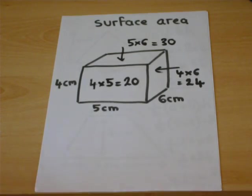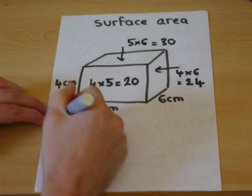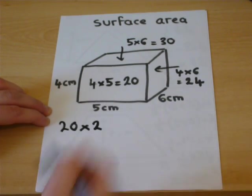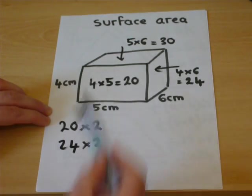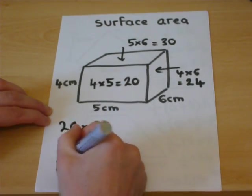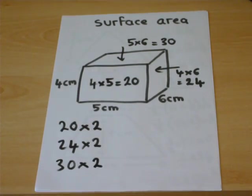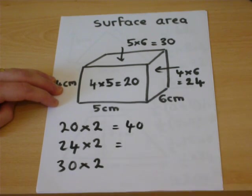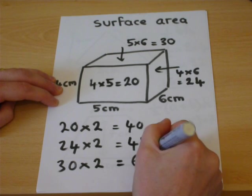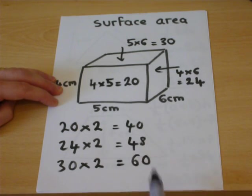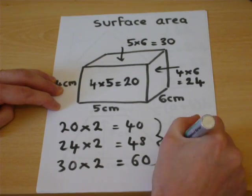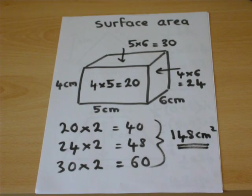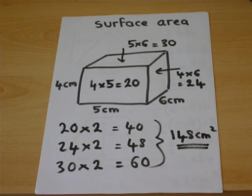This helps us find the surface area because the front and back of the shape must both be twenty. The two sides must both be twenty-four. The top and bottom must both be thirty. So the surface area will be forty plus forty-eight plus sixty, which equals one hundred and forty-eight centimeters squared. That is how you can find the surface area of a cuboid, though these ideas can be used for any 3D shape.